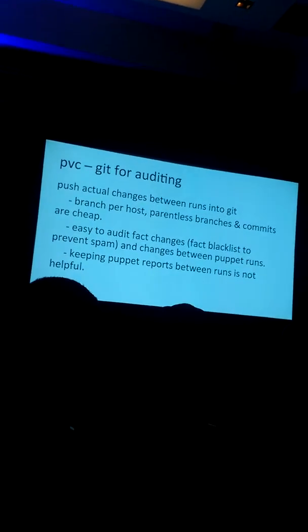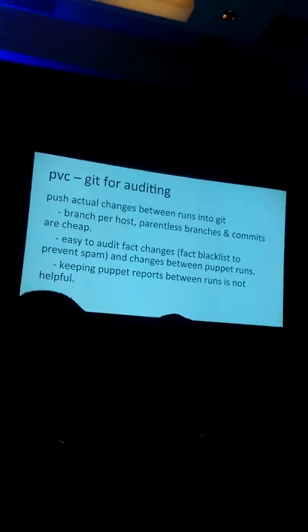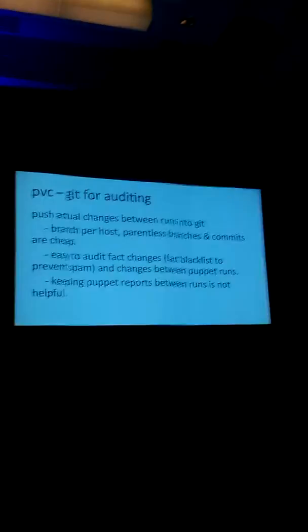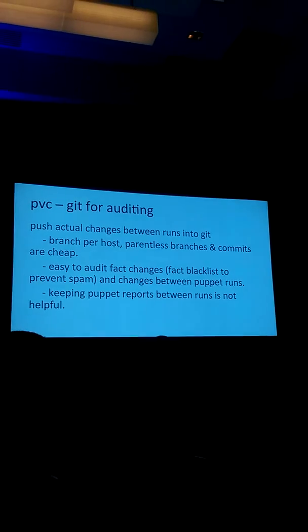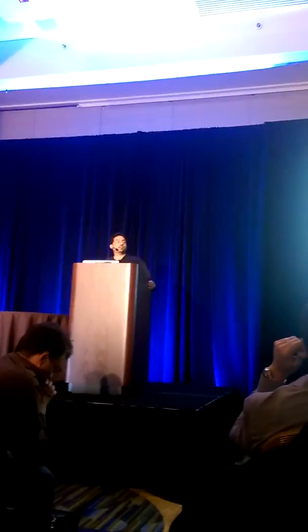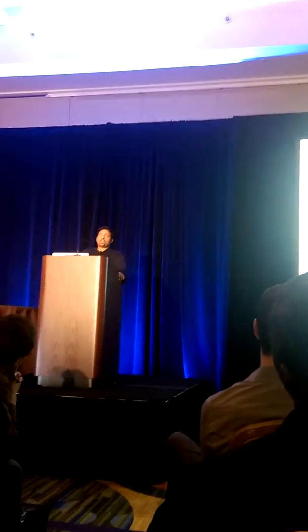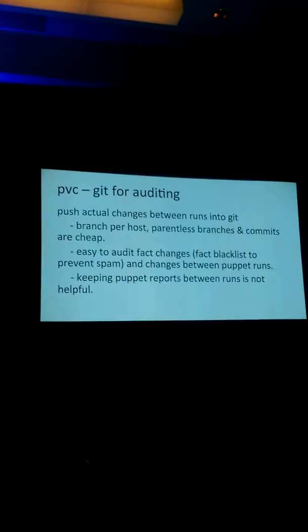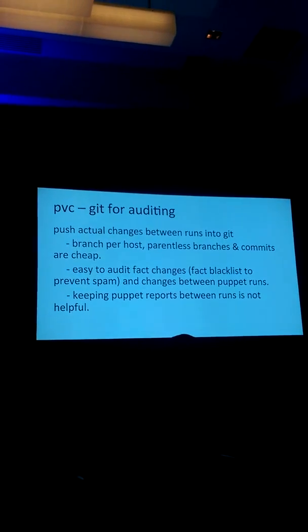We have to keep those tables nice and tight, so it's very hard to go and look through changes. If you've ever looked at a Foreman report view, there are like 100 results — if you're looking for a change, you basically have to page through every page to figure out when something actually changed. So we use git for that because commits are cheap, branches are all parentless, and it's easy to just go and see how the facts changed or how a host actually changed. We just leverage git's diff functionality.